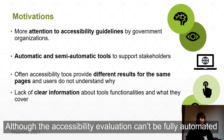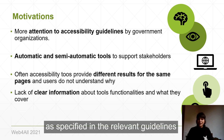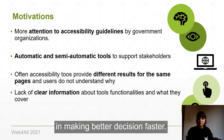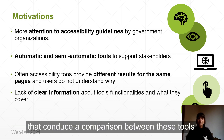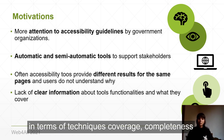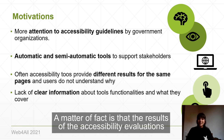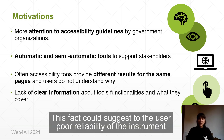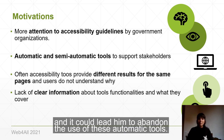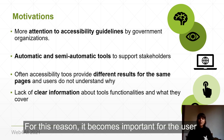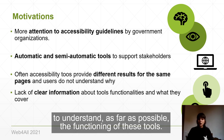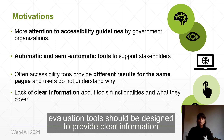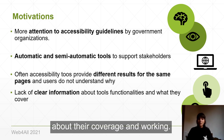Although accessibility evaluation cannot be fully automated, as specified in the relevant guidelines, these tools could offer useful support to stakeholders in making informed decisions faster. There are in the literature many works that conduct a comparison between these tools in terms of techniques' coverage, completeness, or specificity of the evaluation. The results of accessibility evaluations are different from tool to tool, which could suggest to users a poor reliability of the instruments and lead them to abandon the use of these automatic tools. For this reason, it becomes important for the user to understand the functioning of these tools. Little attention has been paid to how automatic accessibility evaluation tools should be designed to provide clear information about their coverage and working.